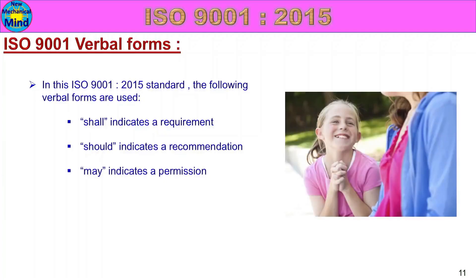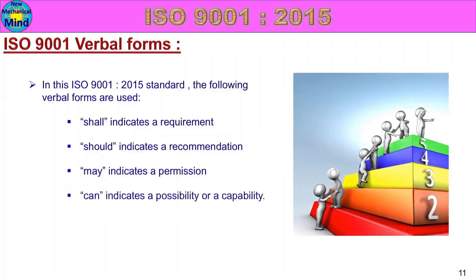'May' indicates permission. If that is used in a sentence, it means the activity has a permitted meaning — you can accept it. 'Can' indicates possibility or capability. If used in a sentence, it expresses the possibility of a future result. If the activity requirement is followed by the activity, we can use 'can'.